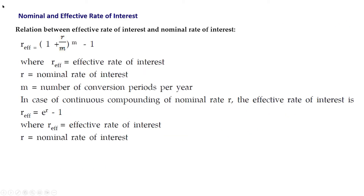To summarize the two formulae: R_effective = (1 + R/m)^m − 1, where R_effective is the effective rate of interest, R is the nominal rate of interest, and m is the number of conversion periods per year. In case of continuous compounding, the effective rate is R_effective = e^R − 1. The value of e is 2.718.